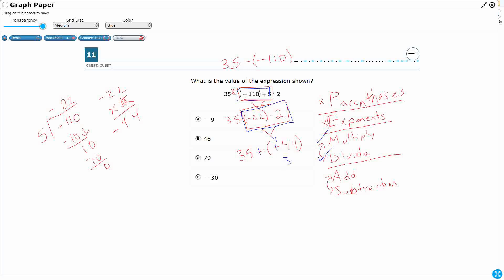So really, this is just going to be 35 plus 44. All of this works out to be 35 plus 44. That makes 79.